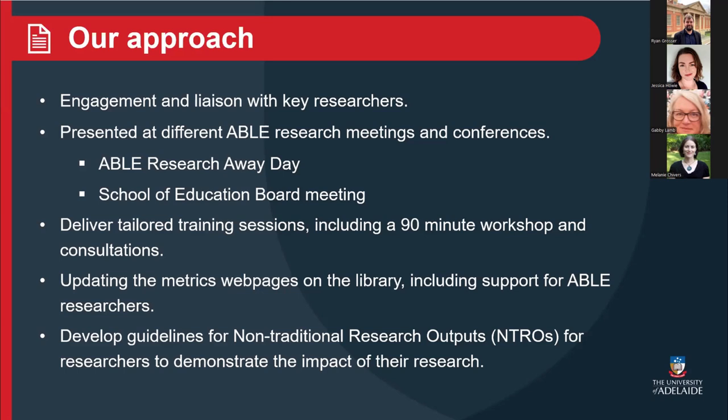In addition to improving our NTRO informational web page, we've also been looking at how we can improve our book metrics. While we have the traditional ways such as citations and book reviews, we've also expanded to include mentions in library holdings — so if the book is in TROVE or WorldCat, which libraries are holding copies of their books.